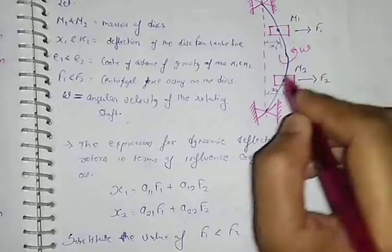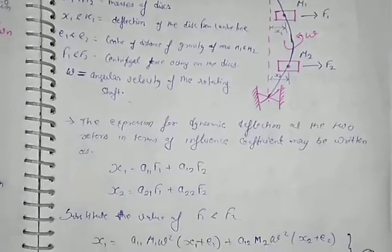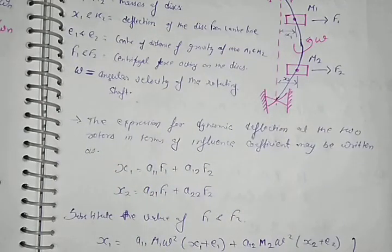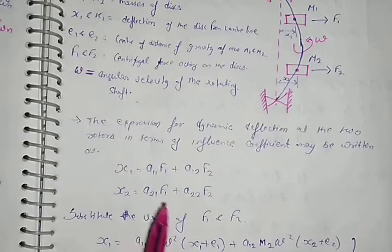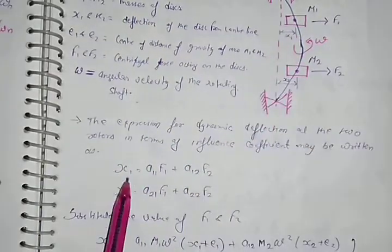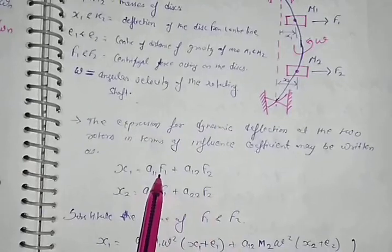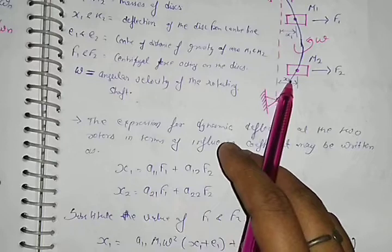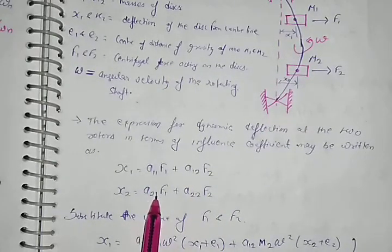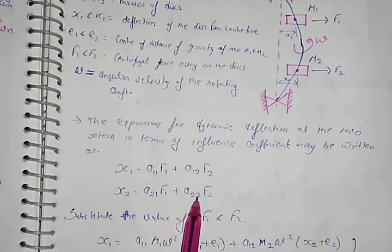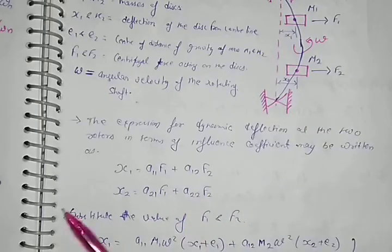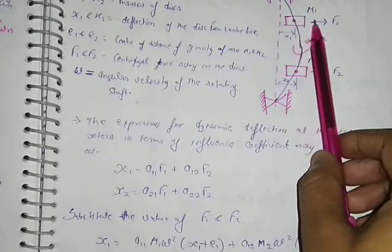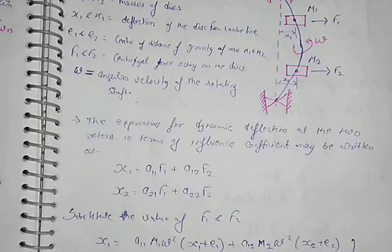Now the expression for dynamic deflection at the two rotors in terms of influence coefficient may be written as X1 = A11*F1 + A12*F2, and for X2 deflection of mass 2 which is equal to A21*F1 + A22*F2. A11 because it's positioned at A11 and when the mass is positioned at A22.